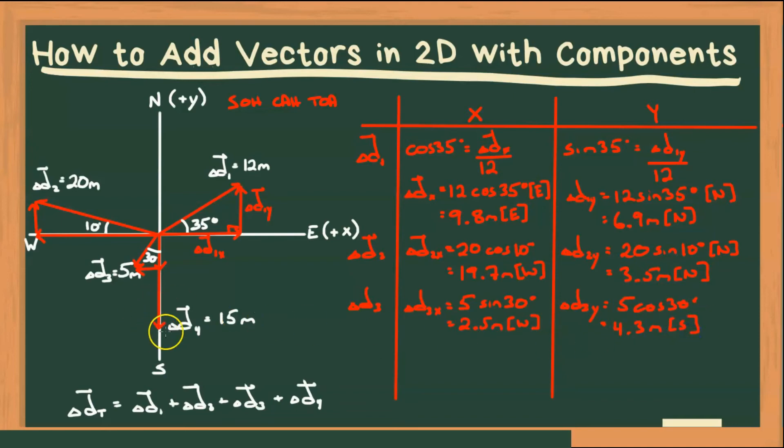Now our last vector is perfectly along our Y axis. It's perfectly vertical, so it has no horizontal component. So for delta D4, we say delta D4X is equal to 0. And delta D4Y, we don't have to calculate because that's given as 15 meters, and the direction is south.